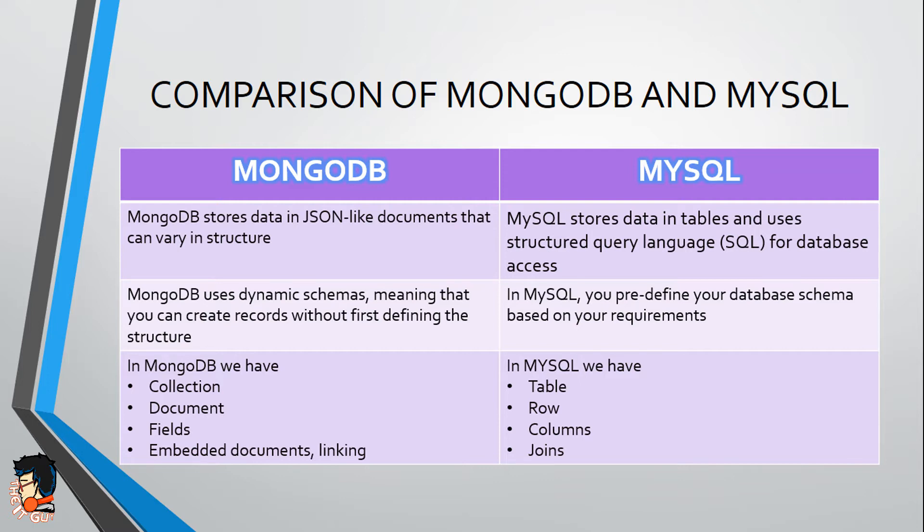It's okay if you don't understand this point right now, because at the end of the series you are going to understand exactly what this means. At some point I'm going to show you in code exactly what this point means. So in MongoDB you have dynamic schemas while in SQL you have static schemas.